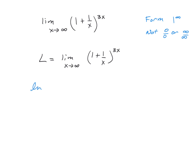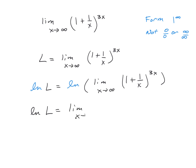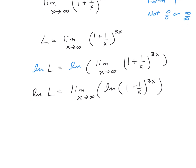Now we're going to take the natural log of both sides. So the natural log of L is equal to the natural log of the limit as x goes to infinity of 1 plus 1 over x raised to the 3x power. Using the composition rule, and then the rules of logarithms, that exponent can come down as a coefficient: this equals the limit as x goes to infinity of 3x times the natural log of 1 plus 1 over x.